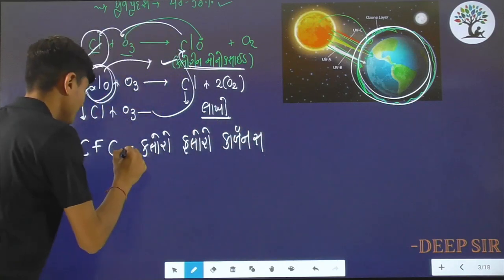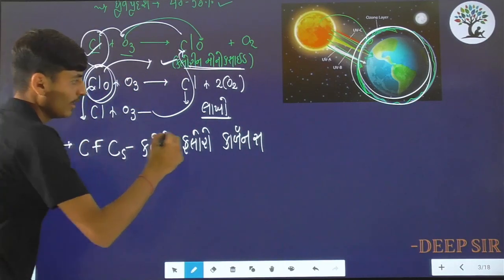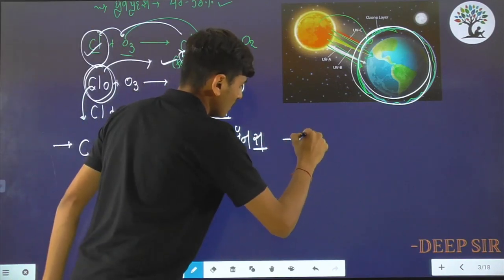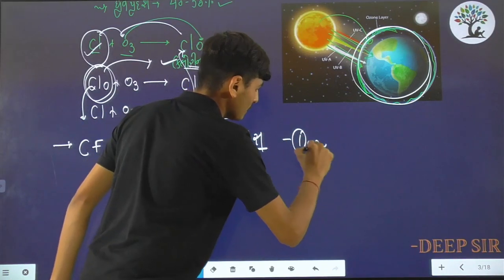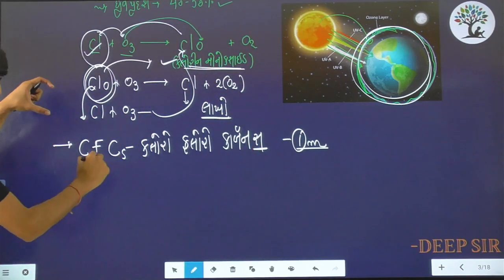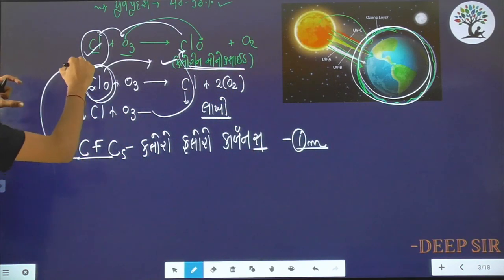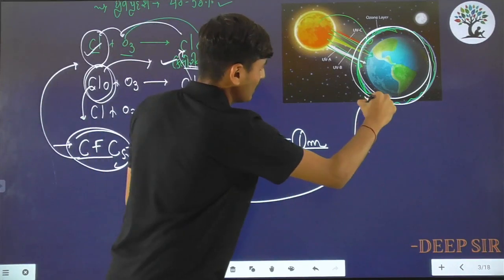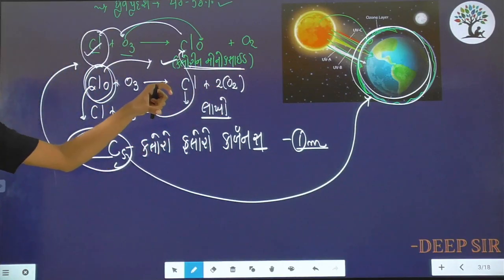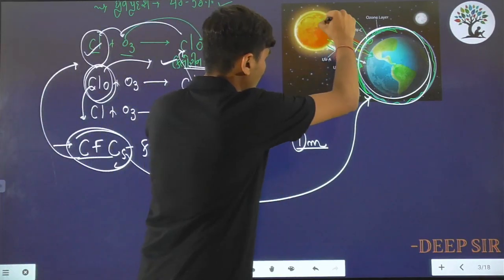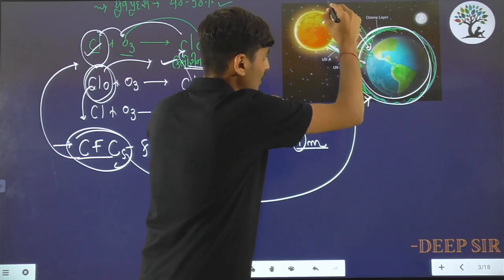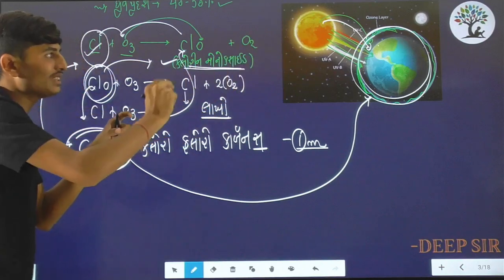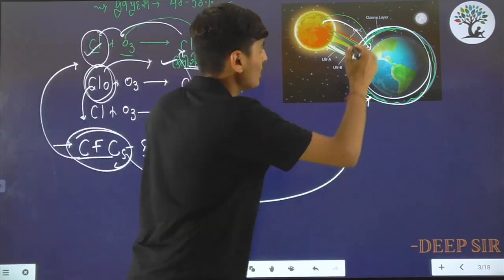CFCs contain chlorine, fluorine, and carbon. These are chlorofluorocarbons - chlorine-containing compounds that deplete ozone.